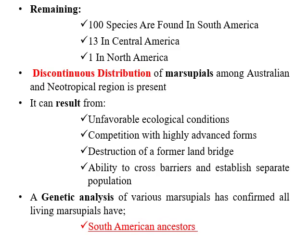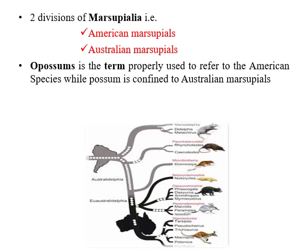A genetic analysis of various marsupials has confirmed that all living marsupials have South American ancestors. The two divisions of marsupials are American marsupials and Australian marsupials. The term 'opossum' is used to refer to American species, while 'possum' is confined to Australian marsupials. That concludes the topic of the Australian region — the Veritable Museum of Archaic Fauna. Thank you.